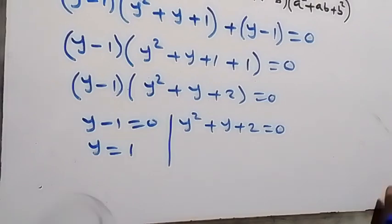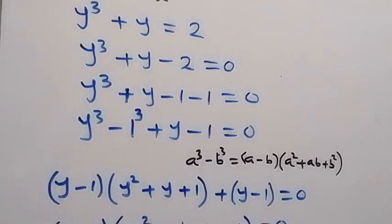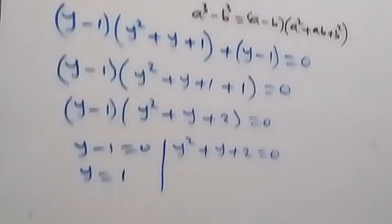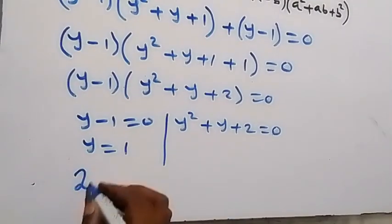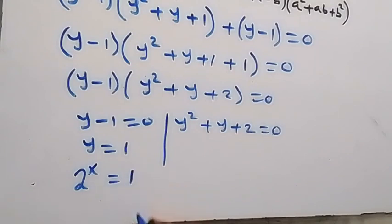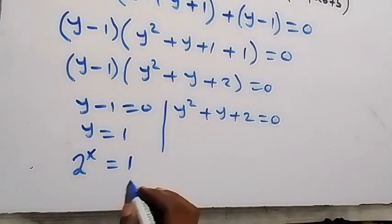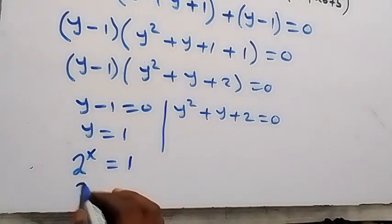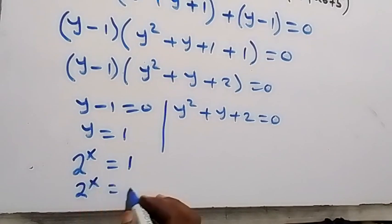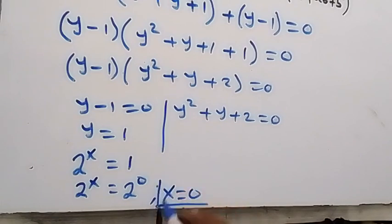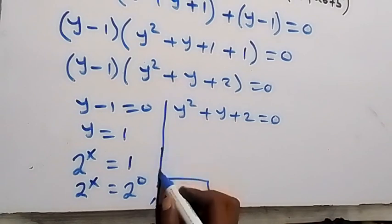From the first case, y minus 1 equals 0 gives y equals 1. Since we defined y as 2 to the power of x, we have 2 to the power of x equals 1. Writing 1 in base 2 as 2 raised to power 0, we get 2 raised to power x equals 2 raised to power 0. Since the bases are equal, x equals 0.